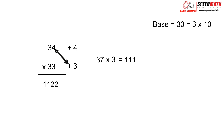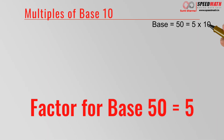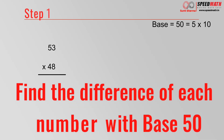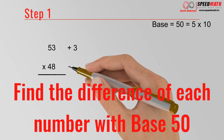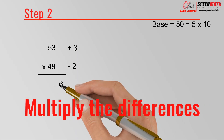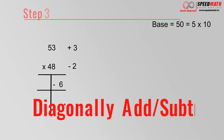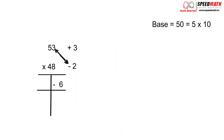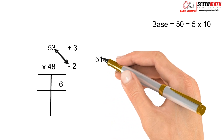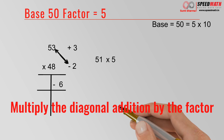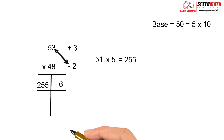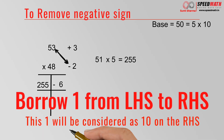Now let's take base 50. Here 50 = 5 × 10, so the factor is 5. Take 53 and 48: 53 is 3 more than 50, and 48 is 2 less than 50. The product of 3 and −2 is −6. Diagonally, since the sign is minus, subtract: 53 − 2 = 51. Multiply 51 by the factor 5, giving 255. Now we need to get rid of that negative sign.